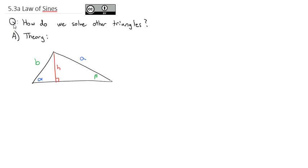We have the right triangle on the left and the right triangle on the right. Notice that from alpha and beta, the height is always the opposite side, and A and B are always the hypotenuse side. We don't know anything about the adjacent sides to alpha and beta.